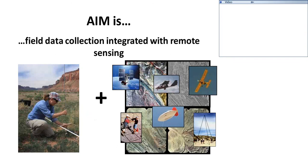The fourth principle of AIM is to integrate field-based information with remote sensing whenever possible — to produce remote sensing products, either to validate an existing product or to actually train and help create that product. You'll hear about our own efforts with UAVs from Chris Cole this afternoon, as well as our partnerships with LANDFIRE and the grass-shrub stewardship efforts during the remote sensing section this afternoon.